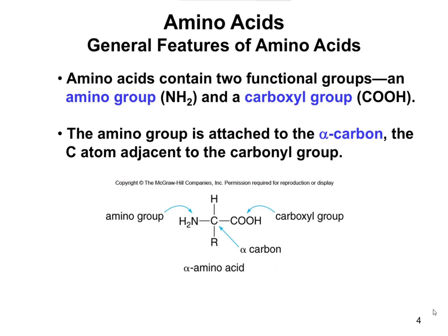Proteins are built from amino acids. Amino acids have two main components: the amino component, which is the amine group (NH2), and the acid component, which is a carboxylic acid (COOH). In the middle is the alpha carbon, which has what we refer to as the R group, also called the side chain. The R group varies from amino acid to amino acid and determines the identity of the amino acid.